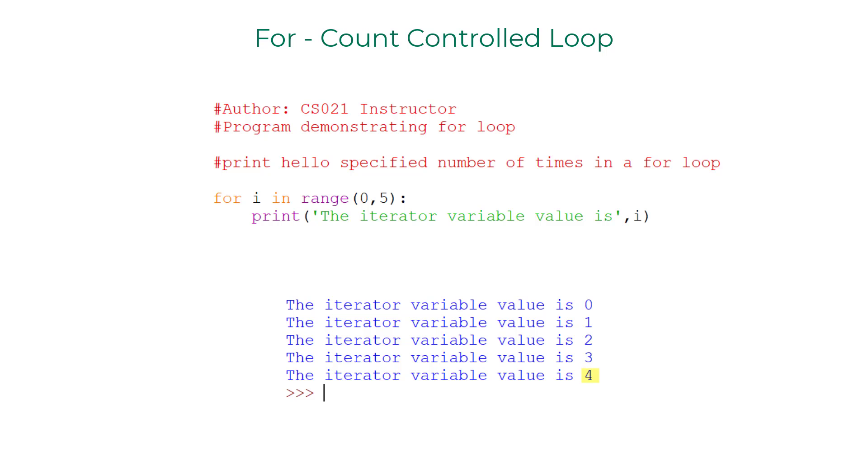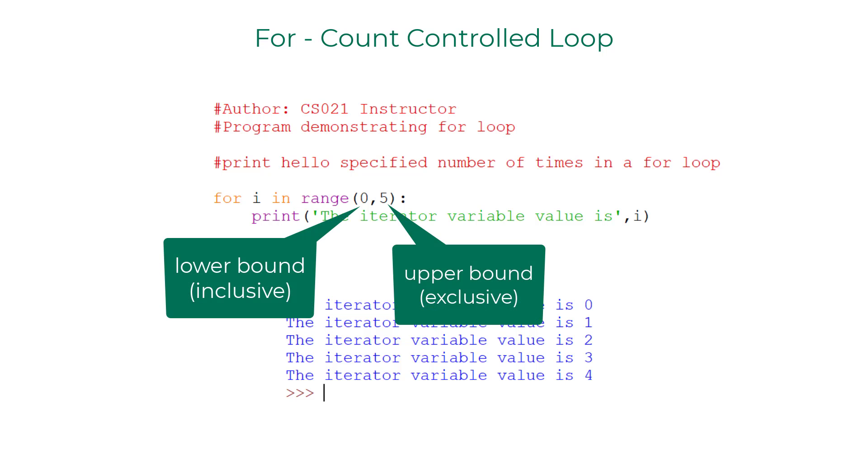You might wonder why it did not include 5 which is specified as upper bound. You need to be mindful of this whenever you use range function in Python. The lower bound is inclusive and the upper bound is exclusive.